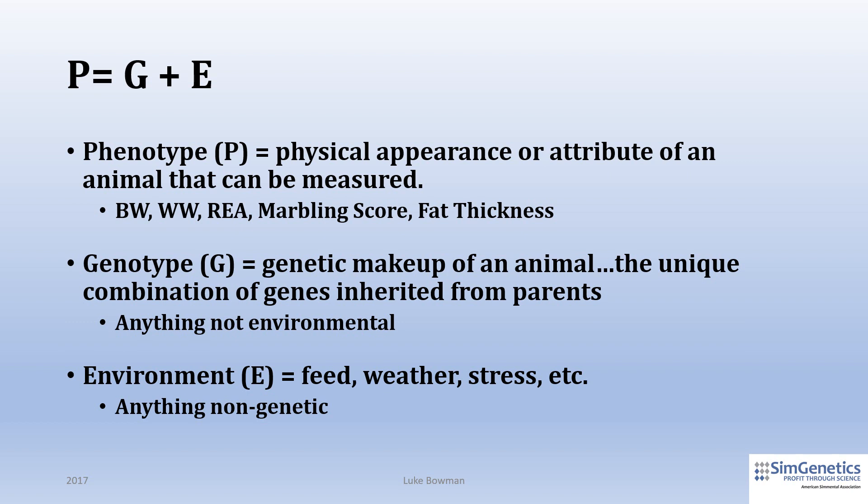When defining the genotype of an animal, it is best explained as the animal's genetic makeup or sequence of genes. This is a unique combination of genes inherited from an individual's parents. Genotype has nothing to do with the environment in which the animal was raised, nor the one it was born in. The last important ingredient to the phenotype equation is the environment in which the animal is raised. This has to do with the feed and water resources, stress, the weather, etc. Environment is basically everything that is not genetic that affects how the animal grows and performs and expresses its genetic potential.